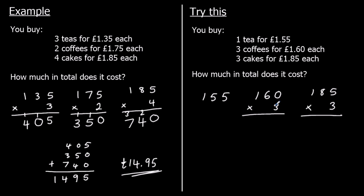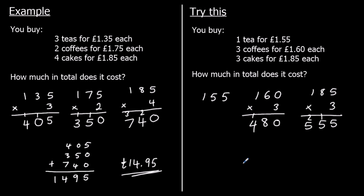For the coffees: three zeros are zero; three sixes are eighteen, so eight in the tens carry one; three ones are three, plus the one is four — so £4.80. For the cakes: three fives are fifteen, five in the ones carry one; three eights are twenty-four, plus one makes twenty-five, carry two; three ones are three, plus the two is five — so £5.55.